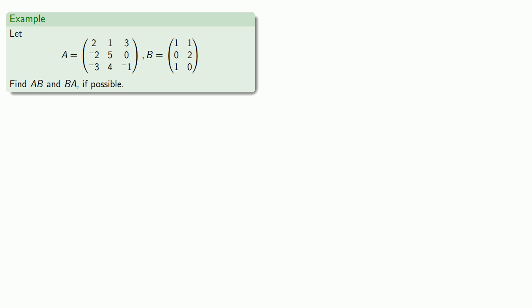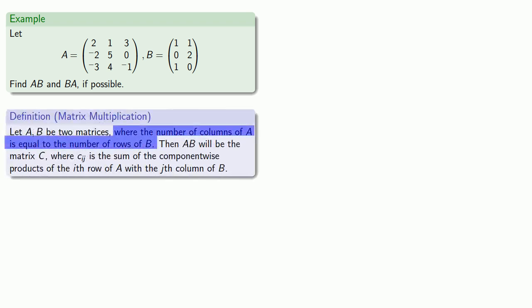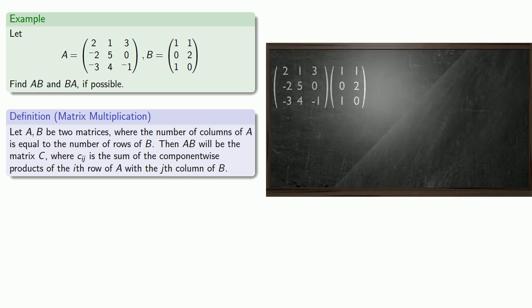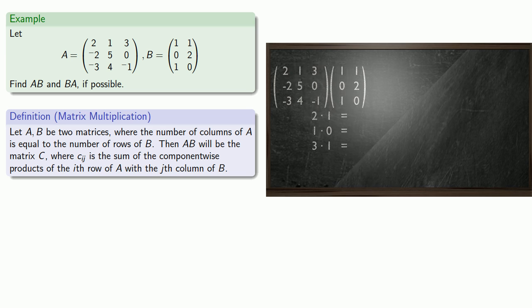For example, suppose we want to multiply the two matrices A and B. There are two products that we might be able to make: AB and BA. Remember that in order to multiply two matrices, the number of columns of the first factor must equal the number of rows of the second factor. Since A has three columns and B has three rows, we can find the product AB. The first row of A times the first column of B gives us the entry in the first row, first column of the product. We form the component-wise products, sum them, and that gives us our first entry: 5.